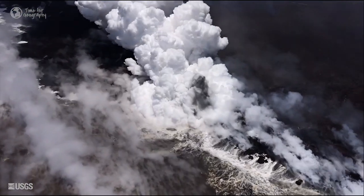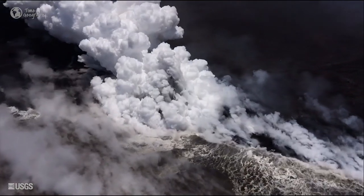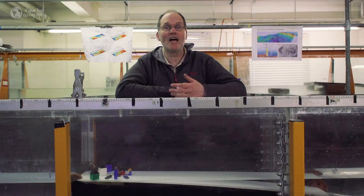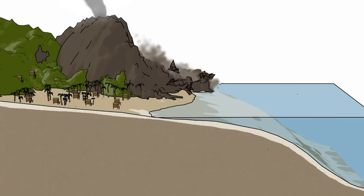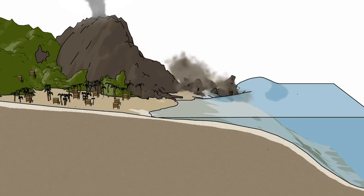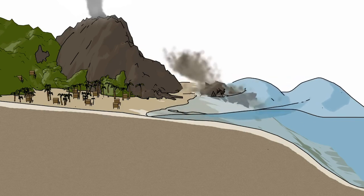Volcanic eruptions can also generate tsunamis. During eruptions, the sides of volcanoes often collapse, creating landslides that fall into the ocean. These landslides then create tsunamis.